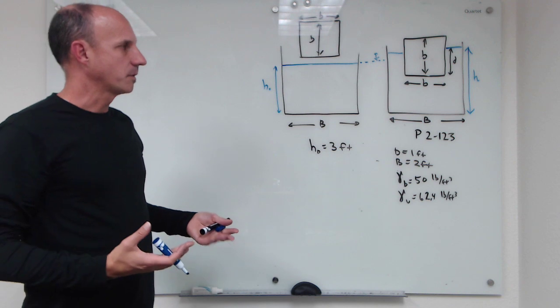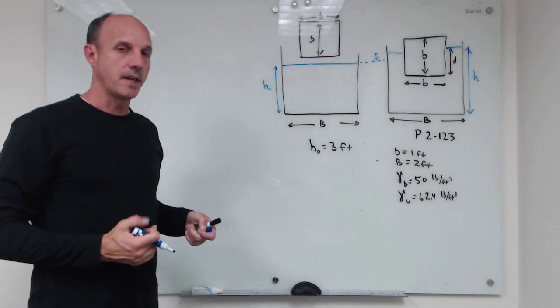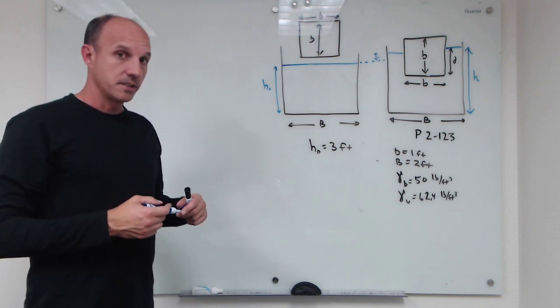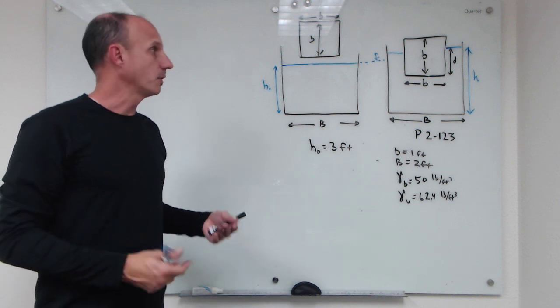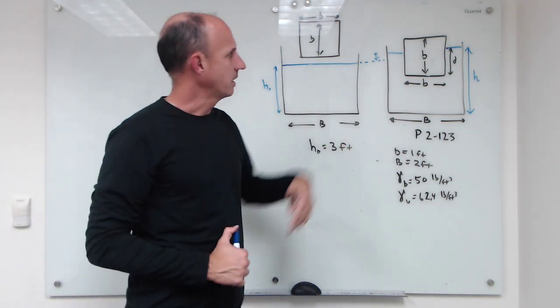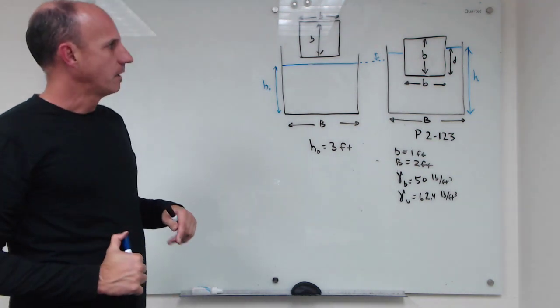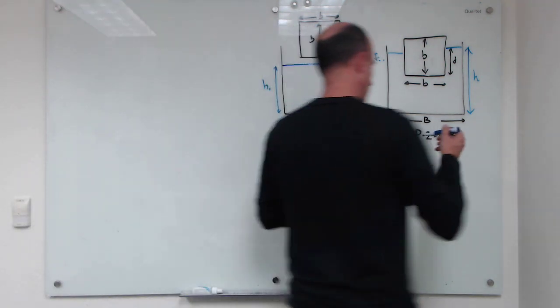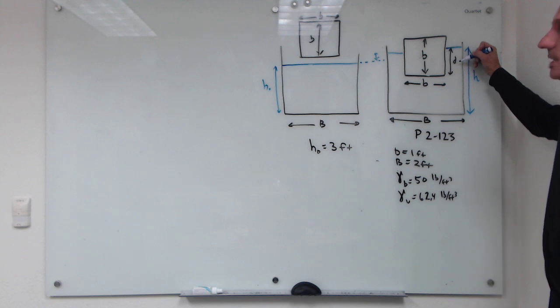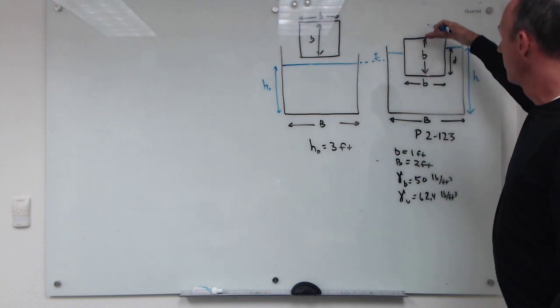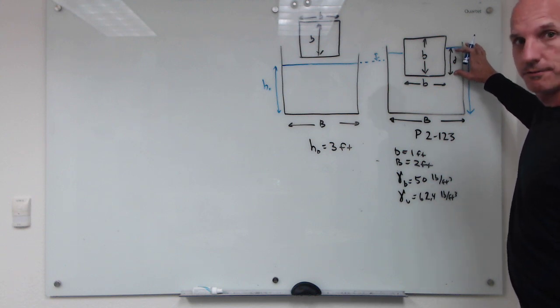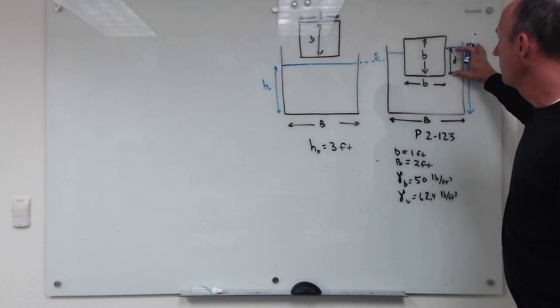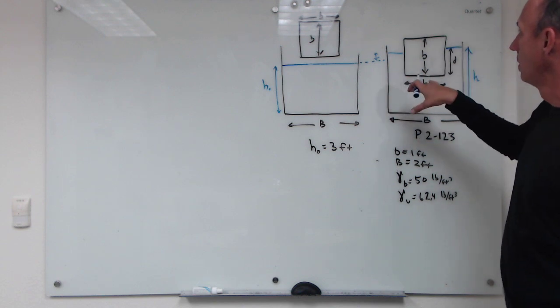The other idea we're going to use is Archimedes principle that the weight of displaced fluid equals the weight of an object when it's floating. So because we've got a floating object here, what I've done is I've introduced a variable d here representing the depth that this block has sunk to, and we're going to solve for that first. Once we know that depth, we can work out what the total depth h is going to be.